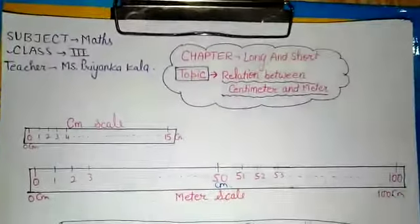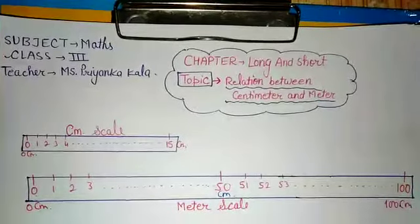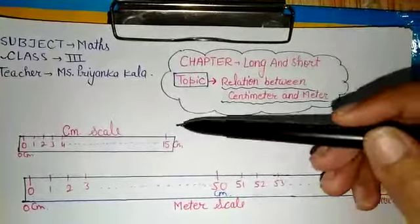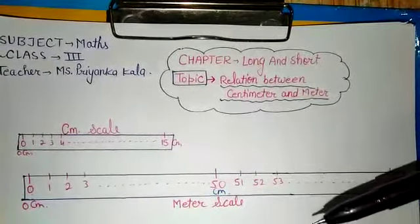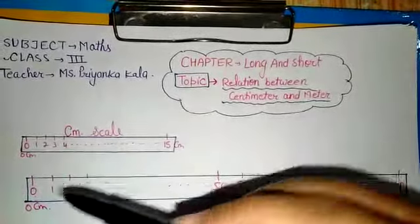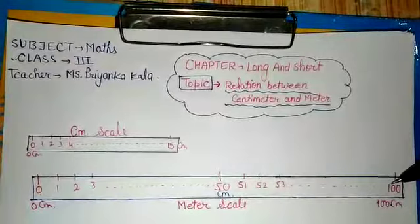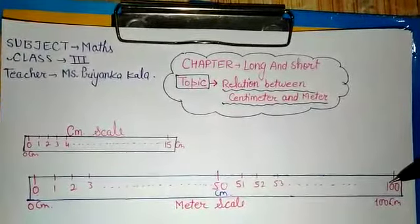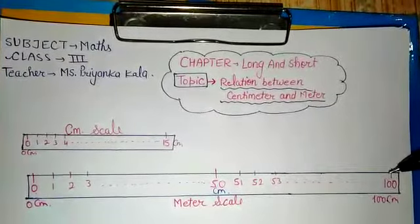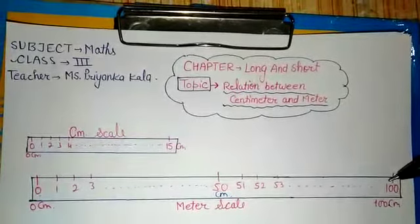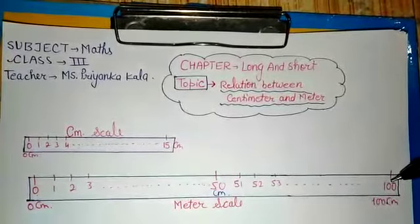Look, you are watching the picture — this is a centimeter scale and this is a meter scale. Yesterday, I explained to you that a meter scale starts from 0 centimeter and ends at 100 centimeter. So if you look at this scale, you can see that it is 100 centimeters.